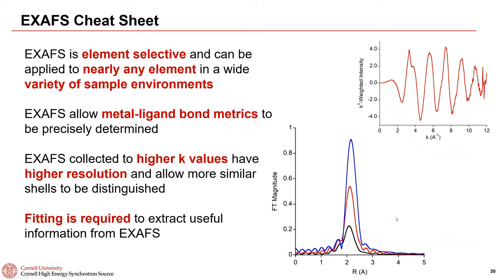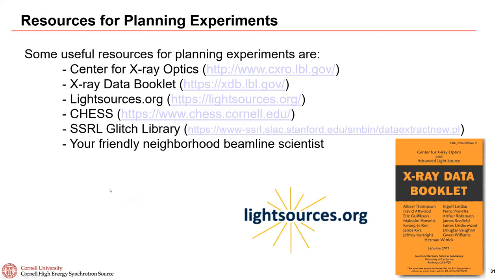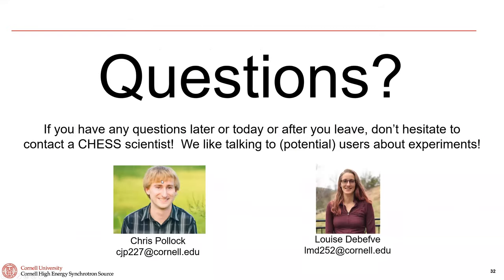To wrap up: EXAFS is element selective and can be applied to almost every element in flexible sample environments. You can get very precise metal-ligand bond distances, and with somewhat lower precision, the identity and number of ligands. Higher k means higher resolution, and fitting the data is essential to extract meaningful information. I'll leave you with a slide of references and resources for planning experiments.